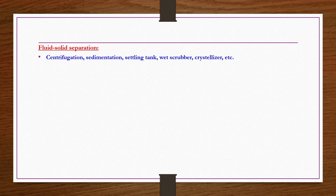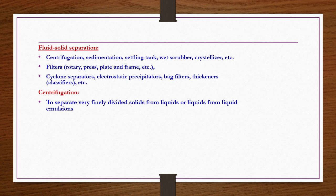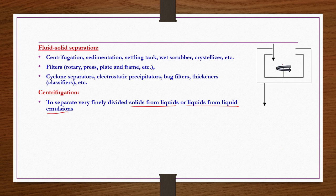Next are solid-fluid separations. There are several equipment types: centrifugation, sedimentation, settling tank, wet scrubber, crystallizer, rotary filters, filter press, plate and frame filters, cyclone separators, electrostatic precipitators, bag filters, and thickeners or classifiers. Centrifugation is used to separate very finely divided solids from liquids or liquid-from-liquid emulsions. The heavier phase is thrown toward the wall of the rotating vessel due to centrifugal action, while the lighter phase is collected toward the center, and separation of phases takes place.